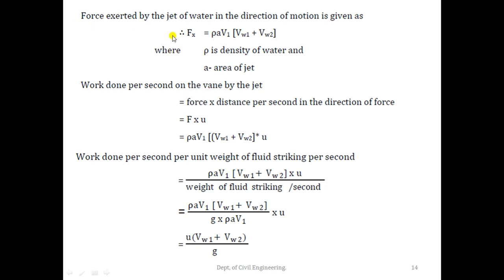The force exerted by the jet of water in the direction of motion is given by Fx = mass of water striking per second × (inlet whirl velocity − outlet whirl velocity) = ρav1 × (vw1 + vw2), where ρ is the density of water and a is the area of the jet. Work done per second on the vane by the jet is force × distance per second in the direction of force, that is F × u = ρav1(vw1 + vw2) × u.